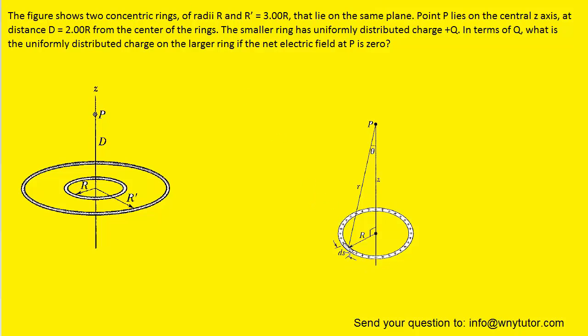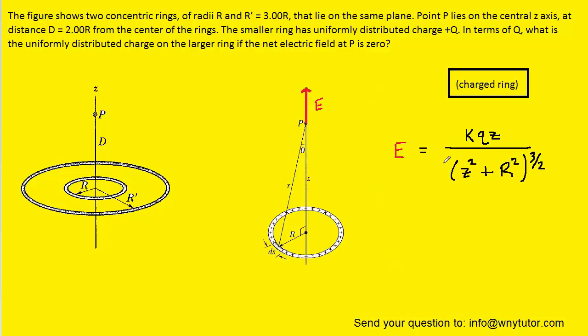the electric field, if the ring were composed of positive charges, would be pointing away from point P, and it would have the magnitude equal to the following expression. So here we have that equation for the electric field magnitude produced by a charged ring.